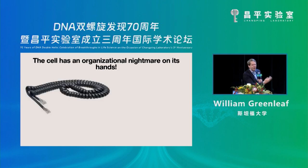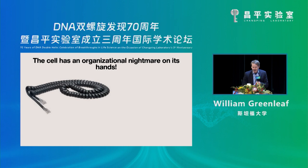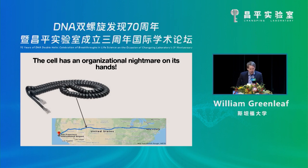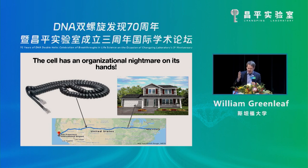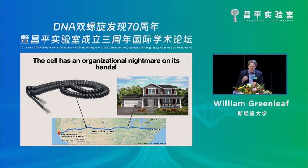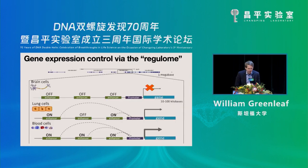That's equivalent to taking a telephone cord — an ancient reference — that stretches from San Francisco to New York, and compacting it into something about the size of a normal two-story house. That's really, really challenging. In the end, the cell uses maybe a couple percent of the genome as regulatory elements that tell it which parts of the rest of the genome need to get used.